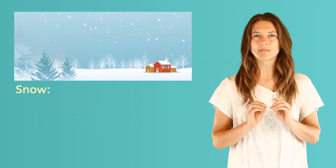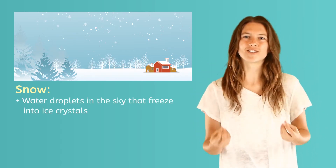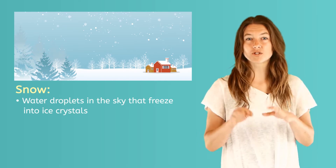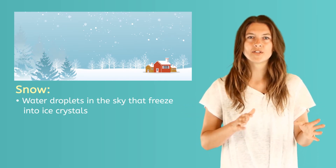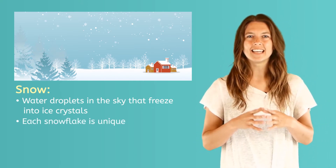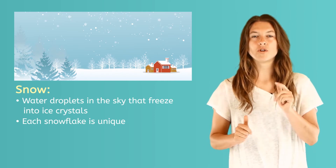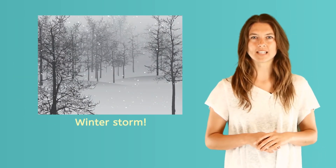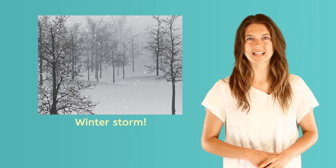Snow is water droplets in the sky that freeze into ice crystals before they fall to the ground. This happens when temperatures are so cold in the layers between the clouds and the Earth's surface. Those snow crystals, or snowflakes, are unique. Even though every snowflake has six points, no two snowflakes are alike. A major winter storm consists of a lot of snow, freezing temperatures, and high-speed winds.